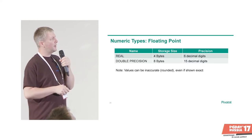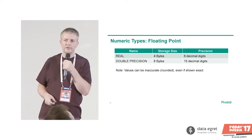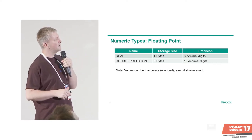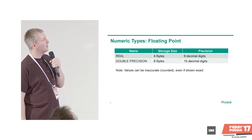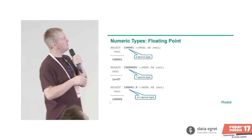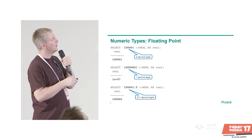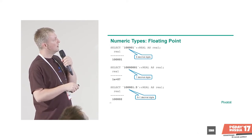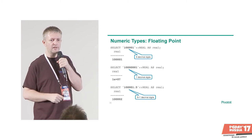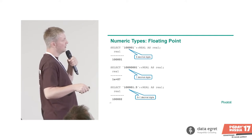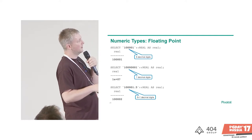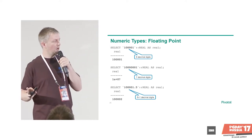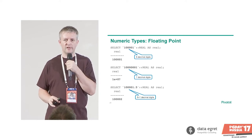We have floating point numbers with 4 bytes and 8 bytes. For floating point numbers you must keep in mind it is always a rounded number — never the exact number you typed in. Internally it's stored as a base and an exponent. With a real (4-byte float), once you go beyond about 6 significant digits it starts rounding. If you try to use 7 digits with a decimal point, you see it actually starts rounding. Please don't store money values or numbers that must be precise in a floating point type — the database will round it.